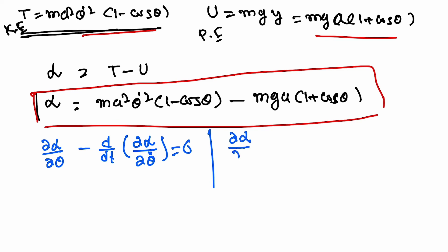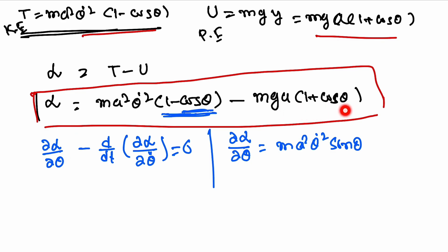∂L/∂θ: differentiating ma²θ̇²(1 - cosθ) with respect to θ gives ma²θ̇² sinθ. Differentiating -mga(1 + cosθ) gives -mga(-sinθ) = +mga sinθ. So ∂L/∂θ = ma²θ̇² sinθ + mga sinθ.